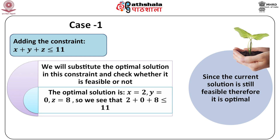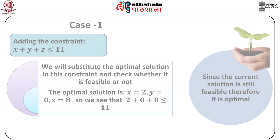Now let us add constraints. Case 1: Adding the constraint x plus y plus z less than or equal to 11. We will substitute the optimal solution into this constraint and check whether it is feasible. The optimal solution is x equal to 2, y equal to 0, z equal to 8. We see that 2 plus 0 plus 8 equals 10, which is less than or equal to 11. Since the current solution is still feasible, therefore it is optimal.